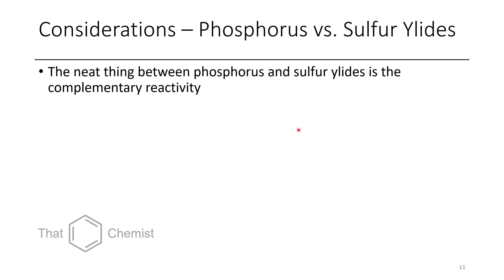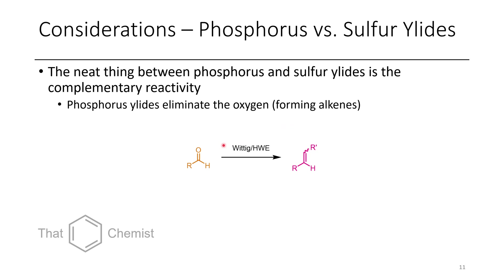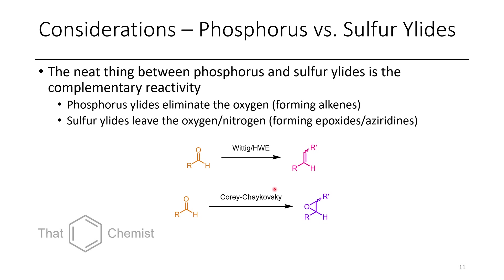Something to consider is the utility of this versus the Wittig or Horner-Wadsworth-Emmons reaction. In the case of a Wittig or HWE, when you add this to a ketone or aldehyde, we actually lose the oxygen — it's transferred to the phosphorus, forming a phosphine oxide as well as your alkene product. In the case of sulfur ylids, the oxygen tends to be retained, so this is a neat reaction to access epoxides versus alkenes, just depending on which reagent you use.